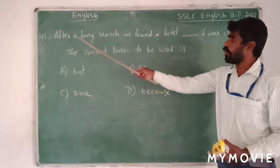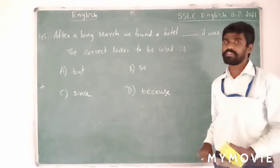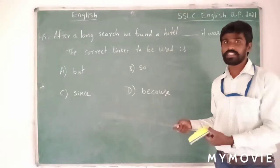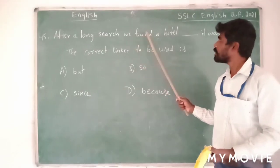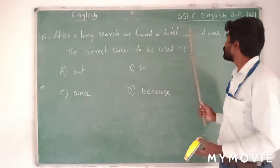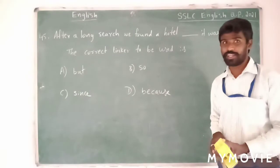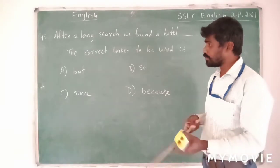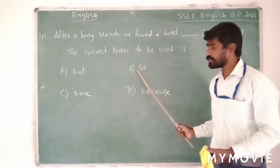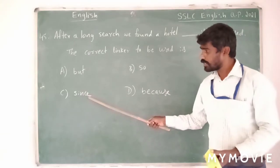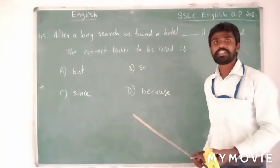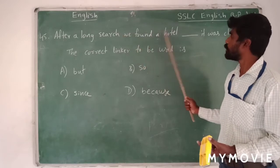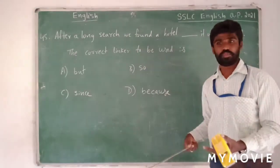You have to work out your common sense in order to answer this question. After a long search, we found a hotel — if you understand this in Kannada: sumarabhutti na hudukkattu nantra, naa ondu hotel na hudukkudvi. Dash it was closed — aadurai adhi adhi kudos agitthu. If you understand the meanings of these linkers: 'but' means 'adhi', 'so' means 'adhari inda', 'since' also means 'adhedarinda', 'because' means 'yak endhere'.